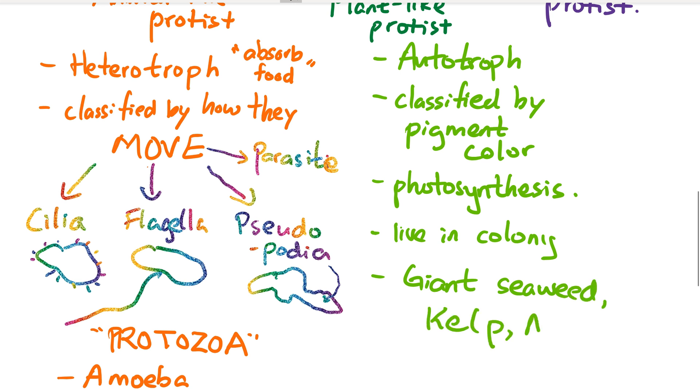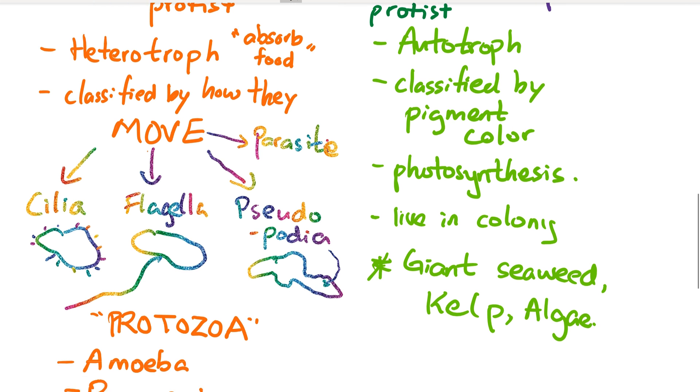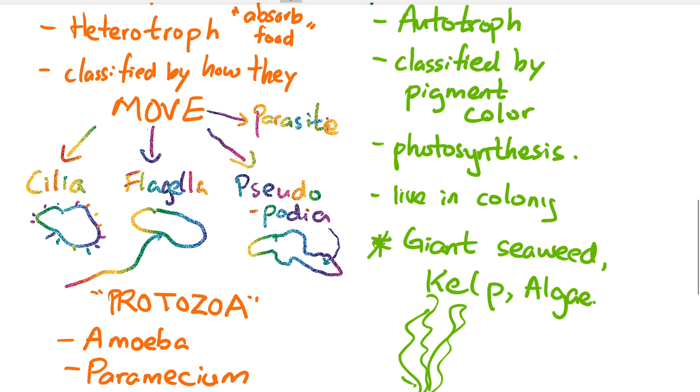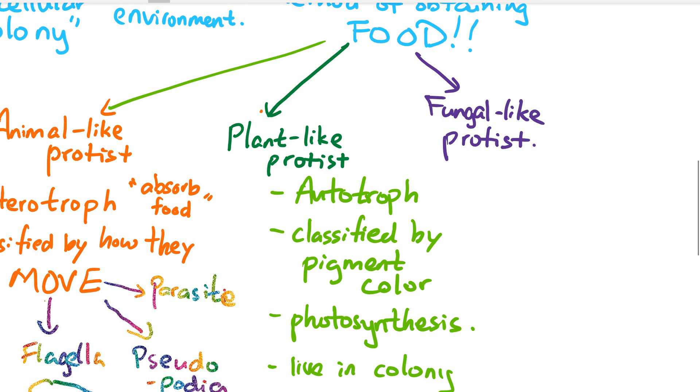These are all examples of plant-like protists, and they kind of look like this—just a sketch of giant seaweed or kelp under water.